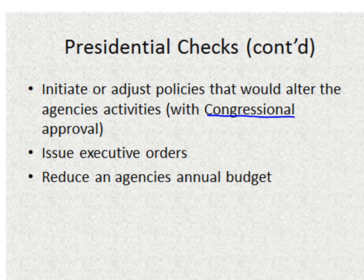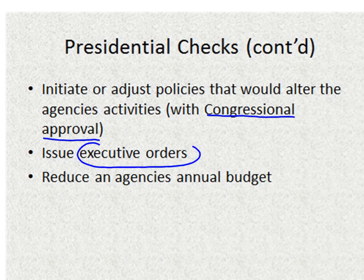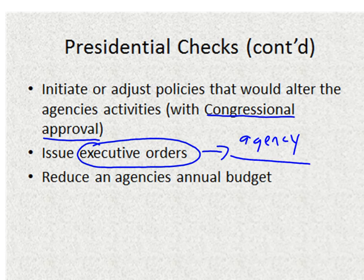You'll notice Congress kind of has the final say in a lot of bureaucratic things. The president can initiate or adjust policies that alter an agency's activities, but he has to run that by Congress. Usually if a president has a lot of political capital, Congress will approve. The executive order can only be directed to an agency — the president tells an agency what it must do, altering how a bill or law is being enforced after it has been passed. So the president's top two checks are executive order and appointment.